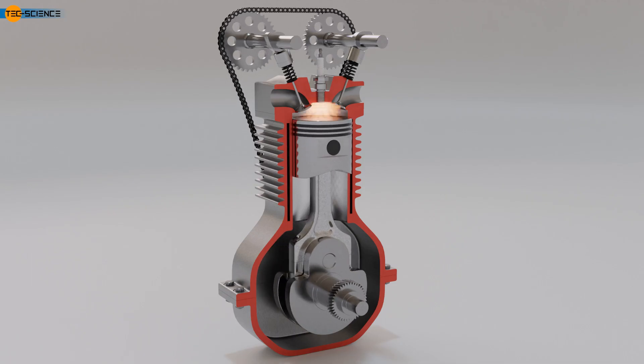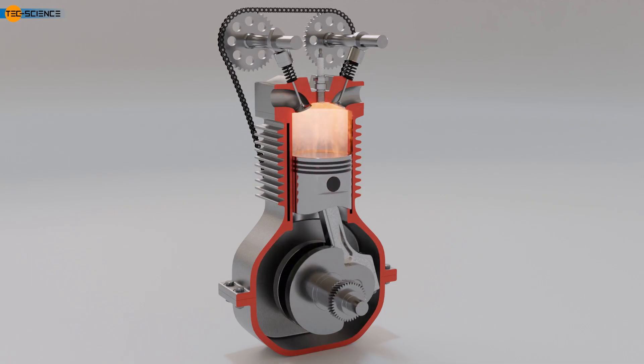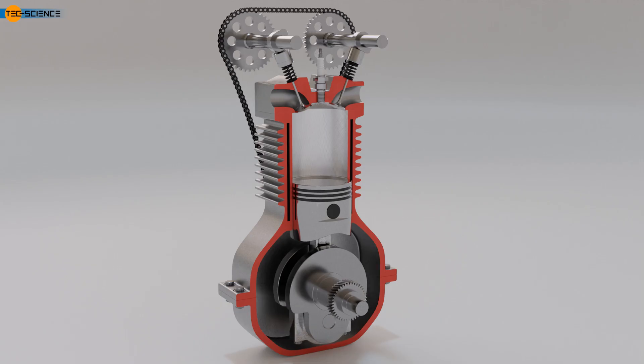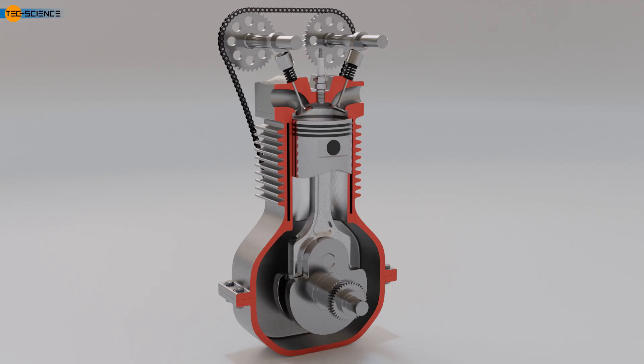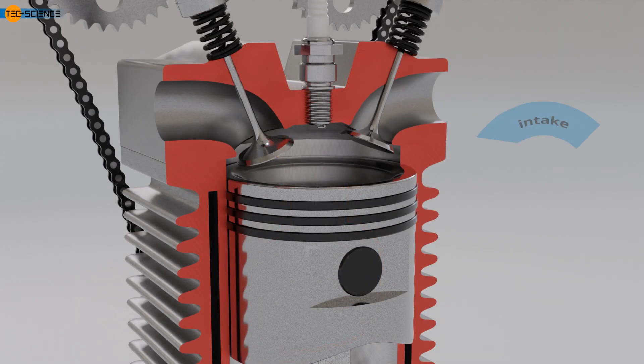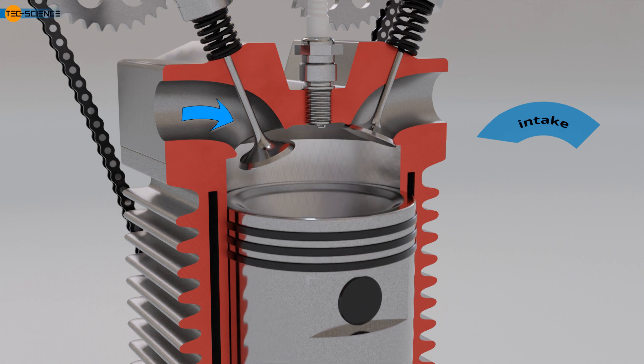The name Four-Stroke Internal Combustion Engine refers to the division of the processes into a total of four steps. These steps are also called strokes, which we will now explain in more detail. In the first stroke, known as the intake stroke, the engine draws in the fuel-air mixture or just air through the intake valve, which is open, while the exhaust valve remains closed, as the piston moves downward.